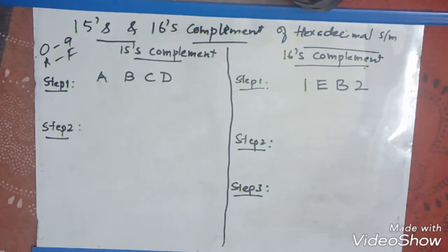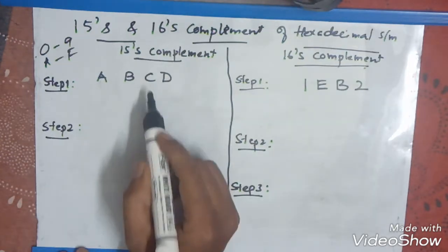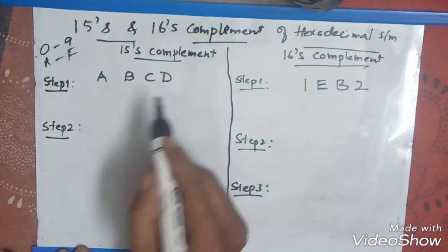As earlier, we have seen the 7th and 8th complement, then 9th and 10th complement. There were only the few steps. Here is the extra step we required is to convert the a, b, c, d that is the hexadecimal number into a decimal number.